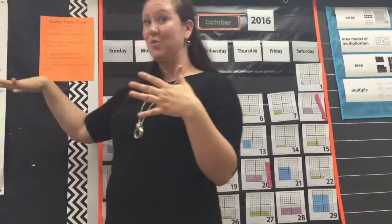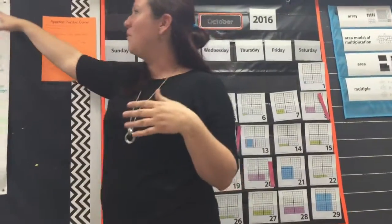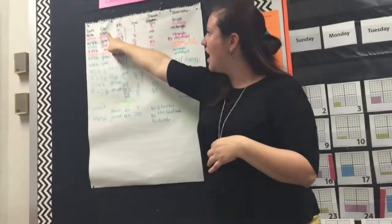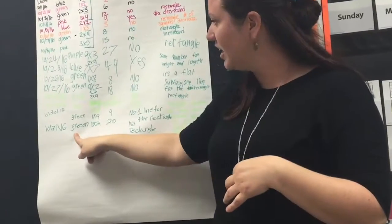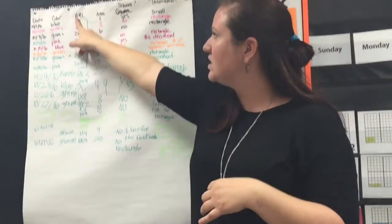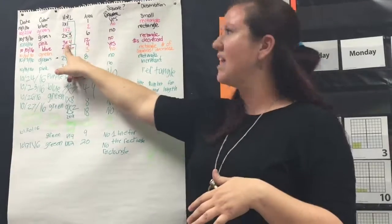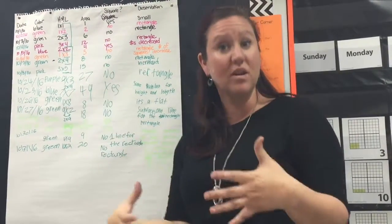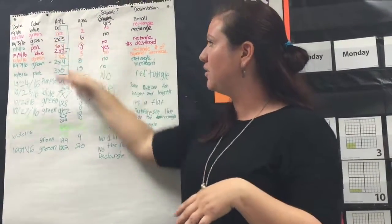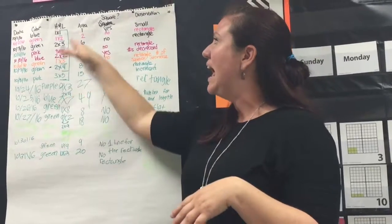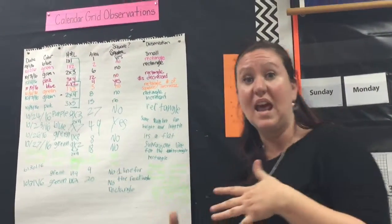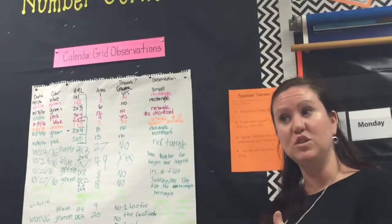I kind of helped them a little bit because I wanted them to feel successful with it. I told them that this is where the pattern ended. So one of the other things that we do is we record everything — the date, the color, and then we start seeing the height and the length. That's when they started realizing, oh, we're multiplying. And we had worked on multiplication, so they were able to figure it out.